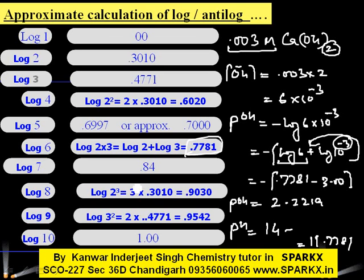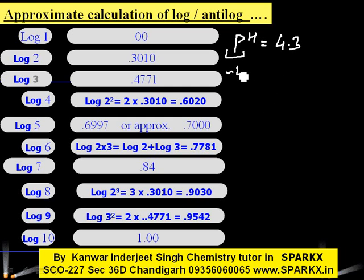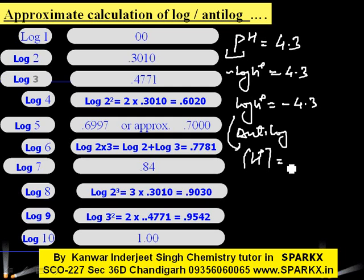Now, if we have to calculate the concentration of H⁺ ions and we are given pH = 4.3, we know pH = −log[H⁺], so log[H⁺] = −4.3. To find [H⁺], we take the antilog. Antilog cancels log, so [H⁺] = antilog(−4.3).